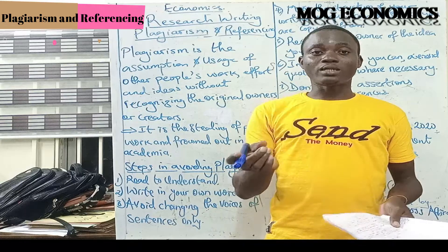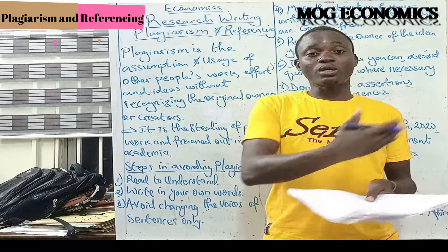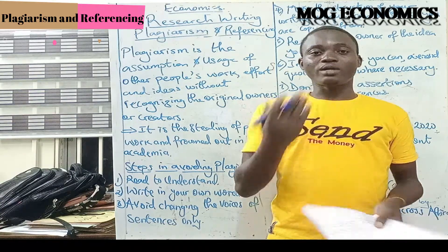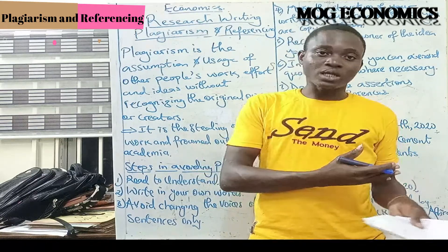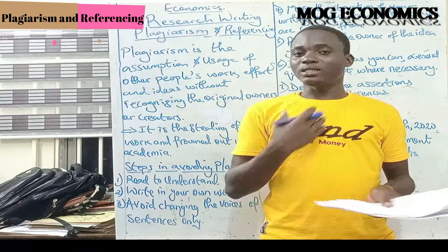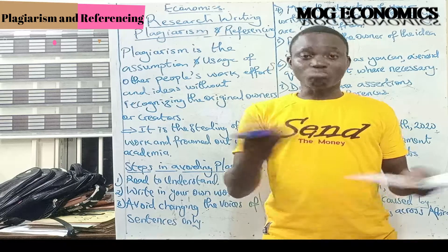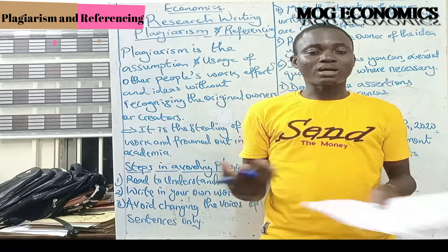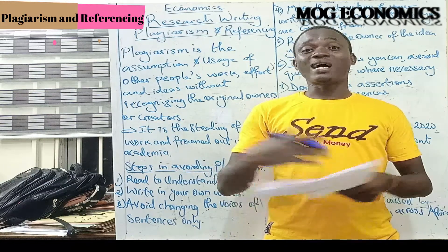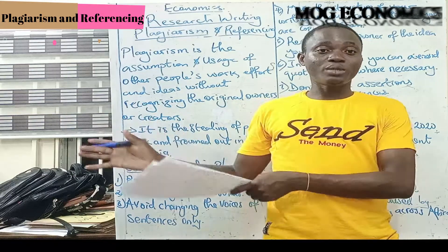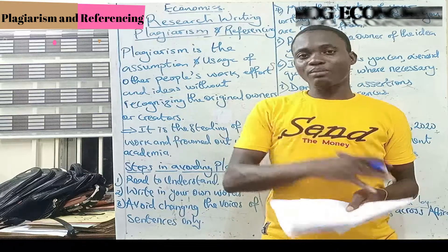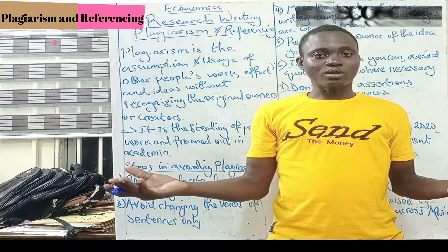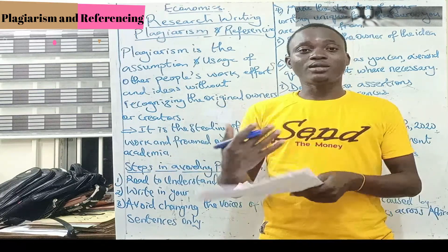In academic writing or any kind of research work, you are more or less building on what someone else has done, so you have to give the person the recognition they deserve. If I write a work and you come to take a part of it in developing whatever it is you are into — it's actually a glory to me that you are making use of it. But if you fail to recognize me, that is where the problem is. I'm not saying don't take my work. As long as I've made that work available, you can make use of it, but make sure that you recognize me and mention that I am the one that did it.